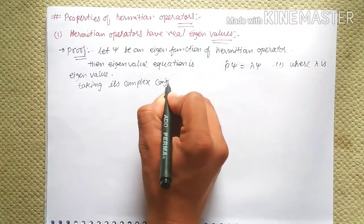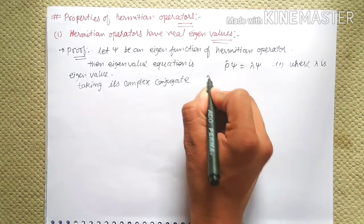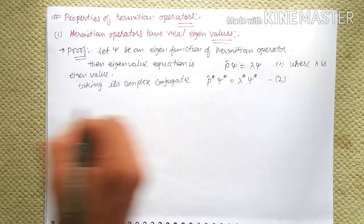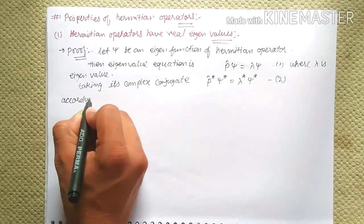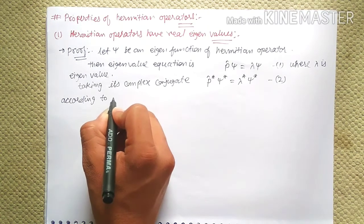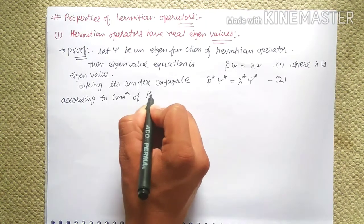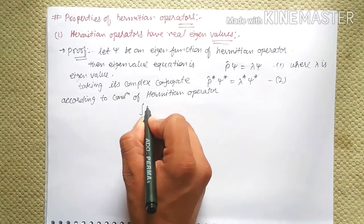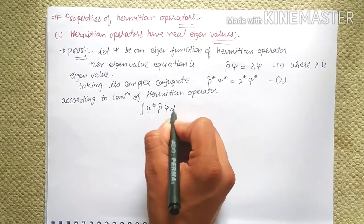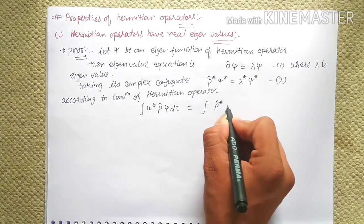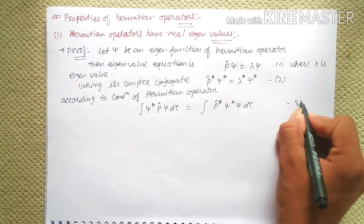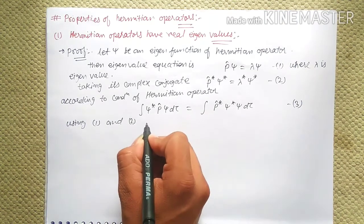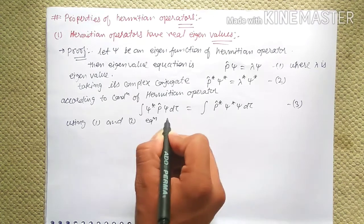Taking the complex conjugate, we get P-hat* psi* equals lambda* psi*, equation two. According to the condition of a Hermitian operator, we know: integration of psi* P-hat psi d-tau equals integration of (P-hat* psi*) psi d-tau, equation three.